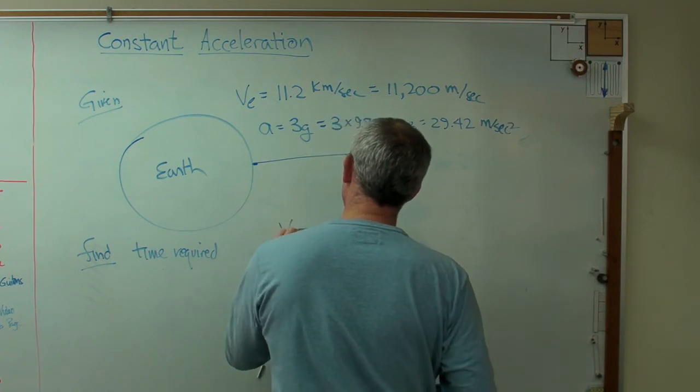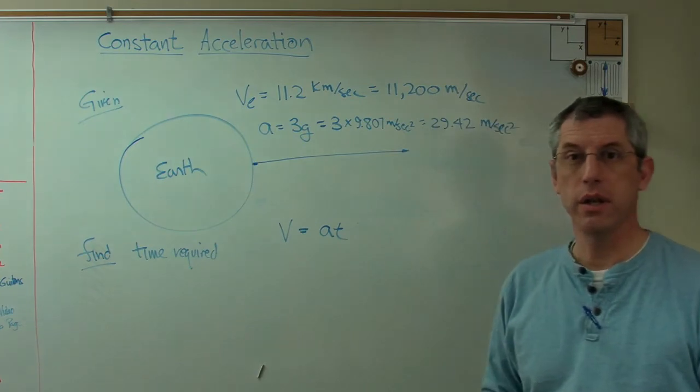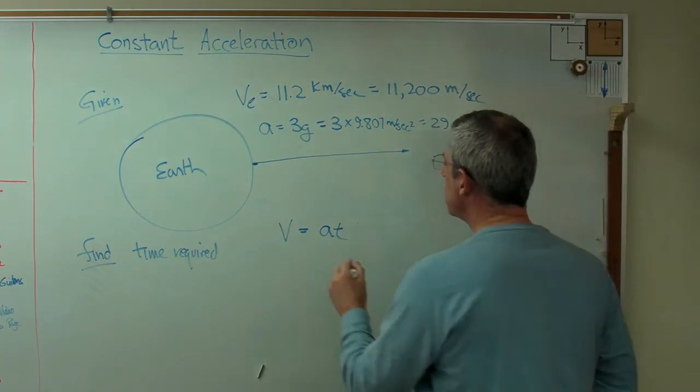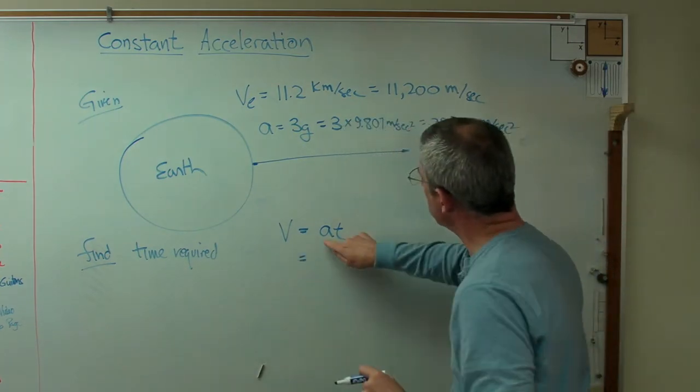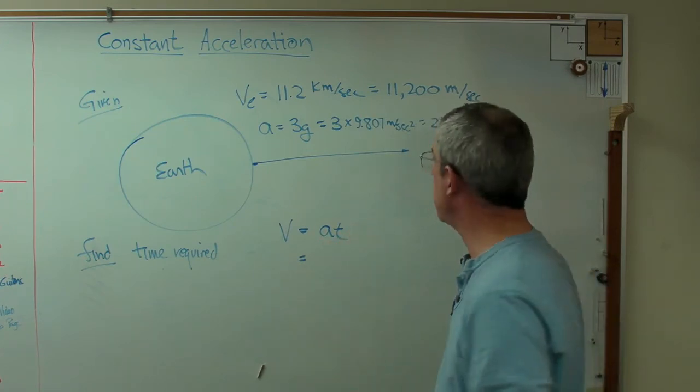So find time required. Well, the velocity, final velocity, is just AT, is the acceleration times the time. And let's double check that to make sure the units work out. That's going to be meters per second squared times seconds. That's going to come out meters per second.